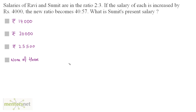The salary of Ravi and Sumit are in the ratio of 2 is to 3. So I can say that Ravi's salary is 2x and Sumit's salary is 3x. Now the salary of each is increased by 4000 and the ratio becomes 40 is to 57.